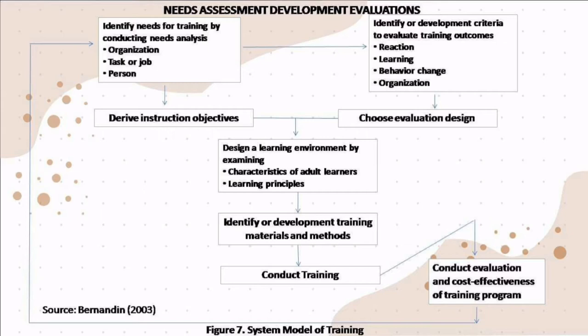After studying those two important factors, we will be able to design our learning environment by examining first the characteristics of adult learners — also known as tenures — and the learning principles. After that, we will identify and develop training materials and methods that can be applied during the process while developing our employees. Then comes the conduct of training. There is no sense in studying and observing the best training method if we don't actually conduct it.